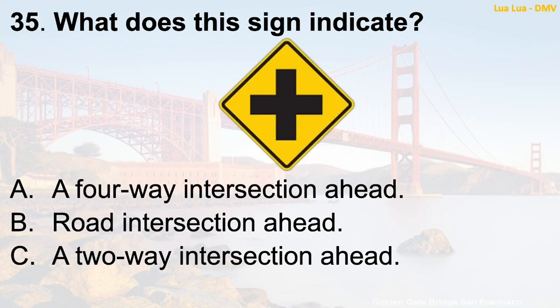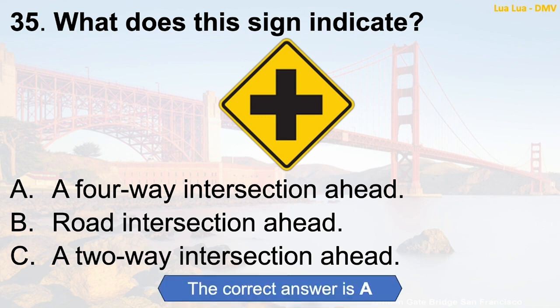Question 35: What does this sign indicate? A. A four-way intersection ahead. B. Road intersection ahead. C. A two-way intersection ahead. The correct answer is A: A four-way intersection ahead.